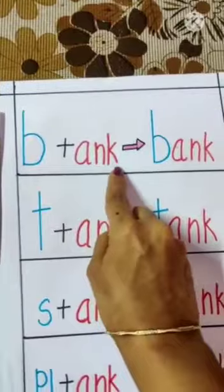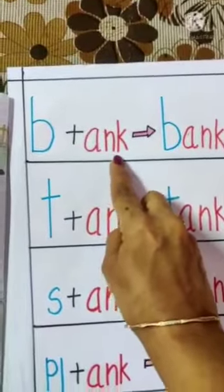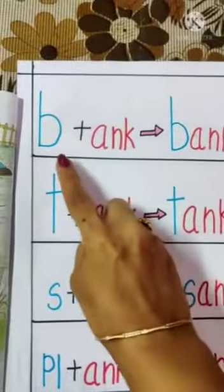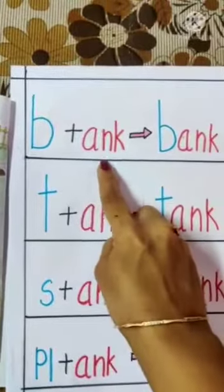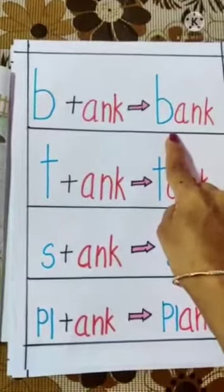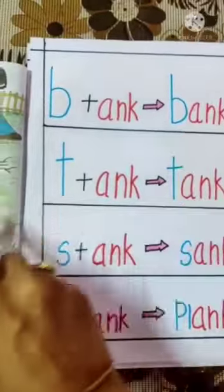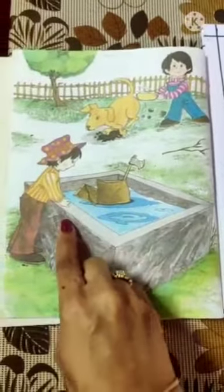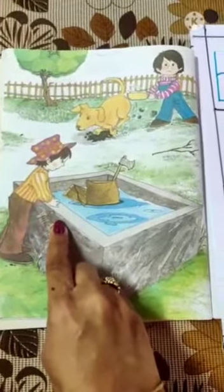A-n-k. Ank. B-ank. Bank. Bank hota hai kinara. Jaisi hi dekho, she is standing on the bank of the tank.